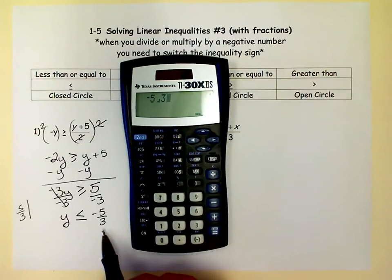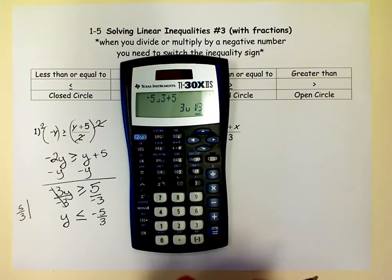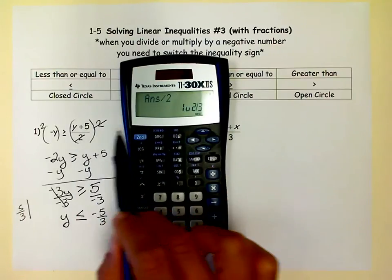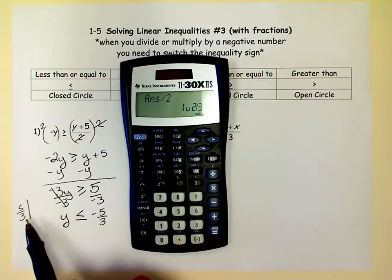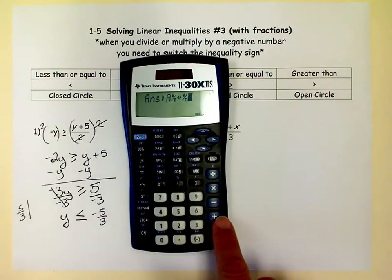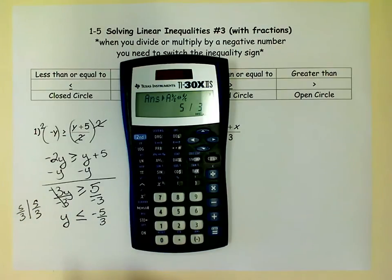Okay, so we have negative 5 thirds that we're putting in for Y. Now we're going to add 5 to it and then we're going to divide it by 2 because that was what our original said. And that says 1 and 2 thirds, which is the same thing as 5 thirds. You can change that to an improper fraction by doing that key so that you see. Now that's just our check to make sure we didn't make any mistakes.